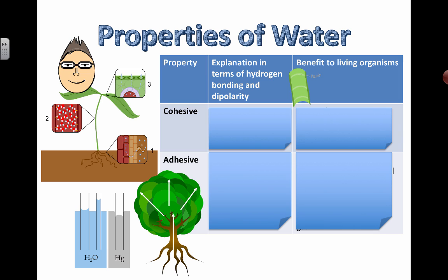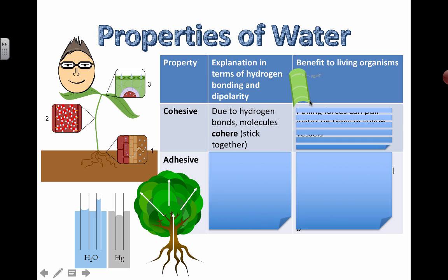We're going to look at four properties starting with cohesion and adhesion, which are both words for sticking to each other. We're going to talk about the benefit to living organisms and also its explanation in terms of hydrogen bonding and polarity. Cohesion refers to when similar substances stick together. In this case, we're talking about water sticking to other water molecules. The reason is because of hydrogen bonding, and we can say that the molecules stick together or that they cohere together.